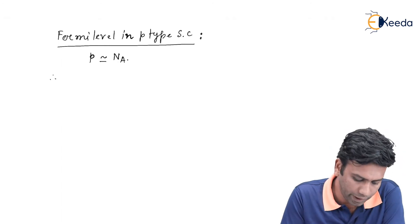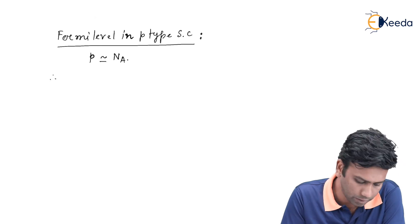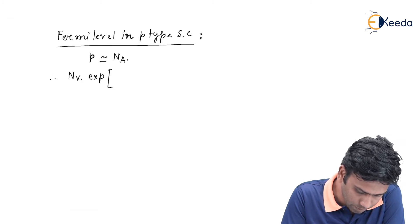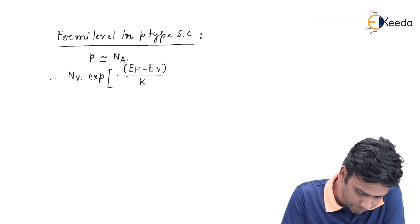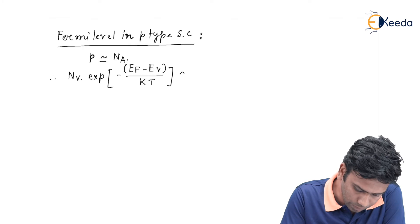So let us put the value of the hole concentration in this equation, that is Nv exponential minus EF minus EV divided by KT. This will be equals to Na.